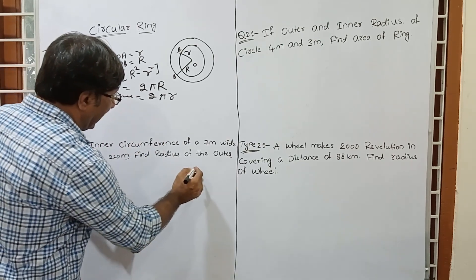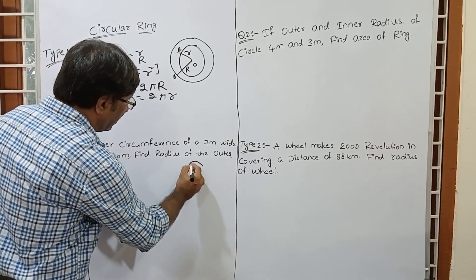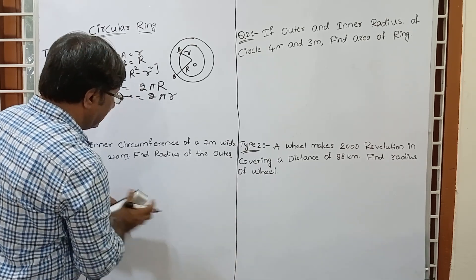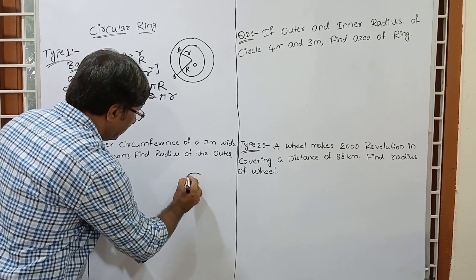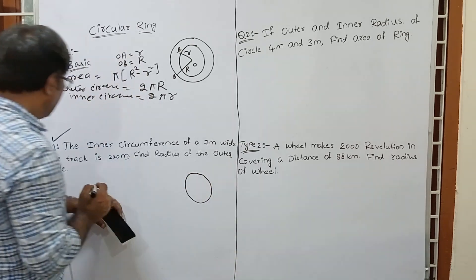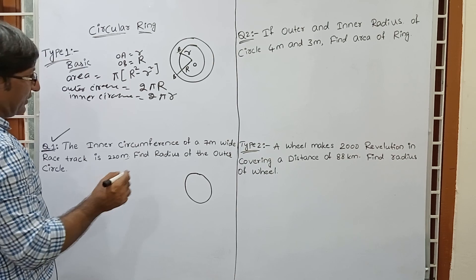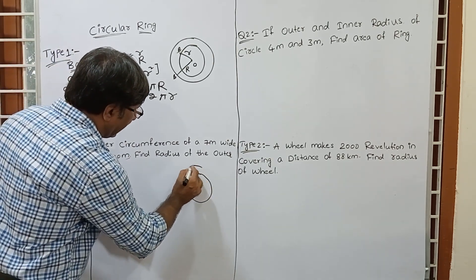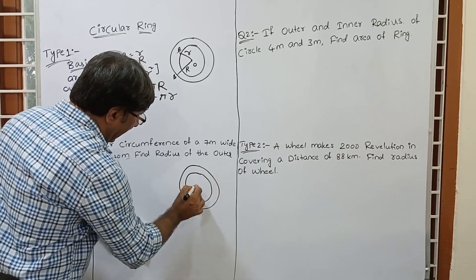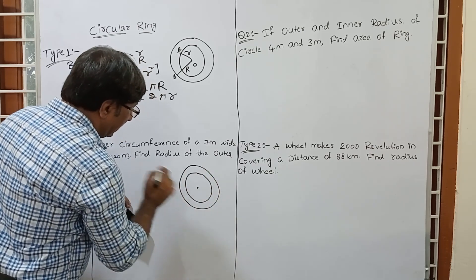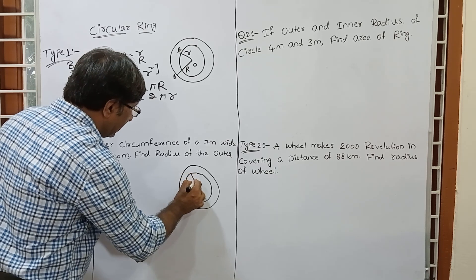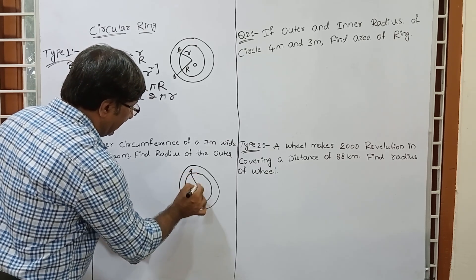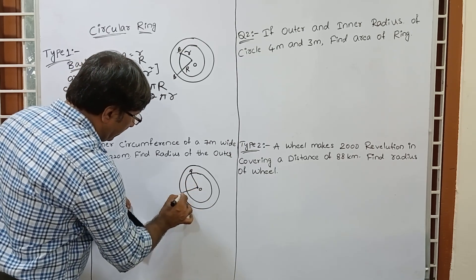For this type of question, just take into mind the figure. Suppose this is a circle. The inner circumference of a 7 metre wide race track — suppose there is a wide race track. This is the centre. The inner radius is OA, the outer radius is OB, so point A, point O, and point B.